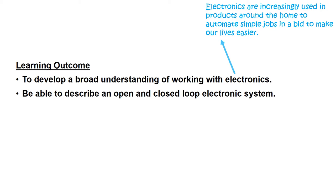Electronics are increasingly used in products around the home to automate simple jobs in a bid to make our lives easier. They are also designed to process more power. For example, electronics on your games consoles 20–30 years ago were very basic with very simple graphics. Now the electronics are much more powerful, giving a much more realistic image. When you're on your computer, it can process a lot more data, much faster — and that's all down to electronics.